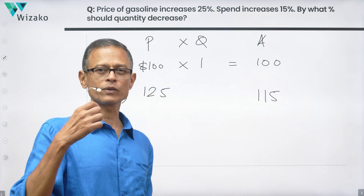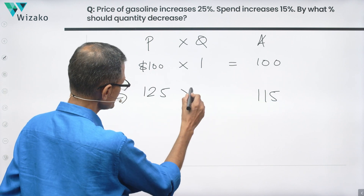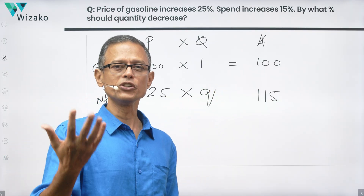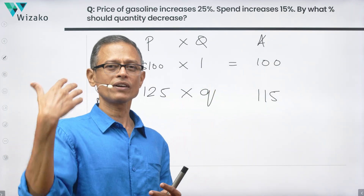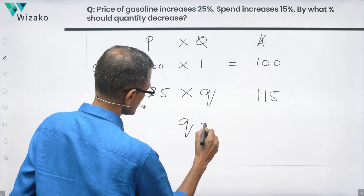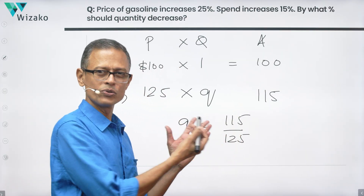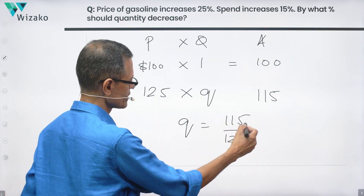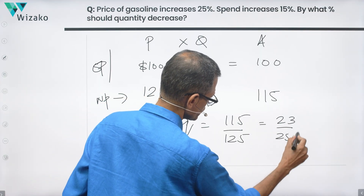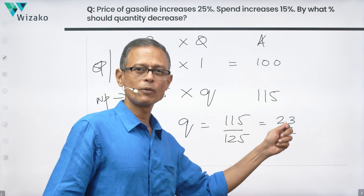So obviously he's not going to get one unit, because one unit at $125 would have cost him $125. The quantity that he is going to get, let's call it Q. We'll compute Q — what new quantity can he buy for $115 if the new price is $125? The quantity is equal to 115 divided by 125. We can reduce it: 115 is 23 times 5, and 125 is 25 times 5, so Q = 23/25. One unit was 25/25, and the new quantity is 23/25, so the quantity has come down.